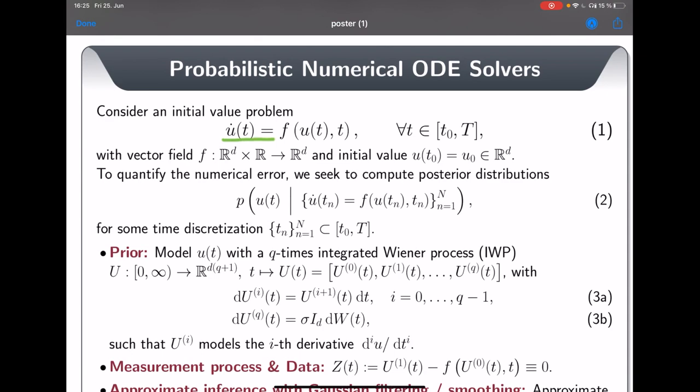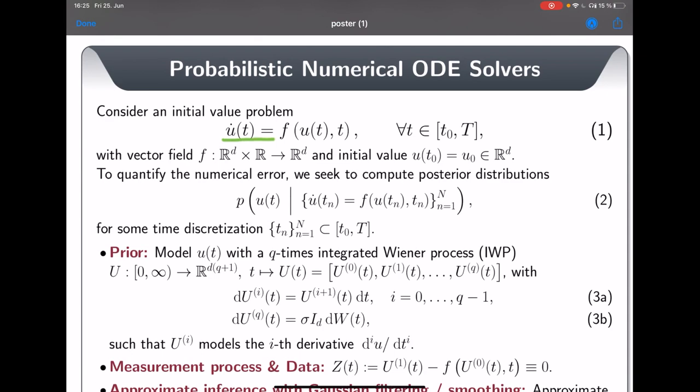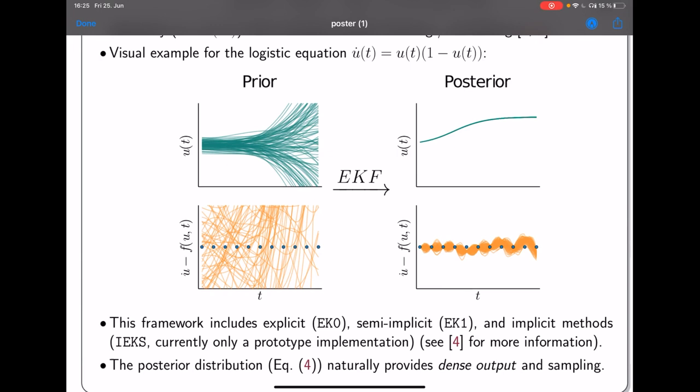To give some background we consider standard ordinary differential equations of this form and the algorithm can be visually explained with the following figure because we perform Bayesian inference which means that we define a prior process over the solution u, we define a measurement process that relates this prior to the ODE solution because it describes the mismatch of the ODE and the current estimate of the derivative and we condition this process on discrete data points.